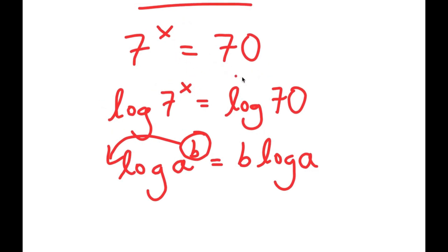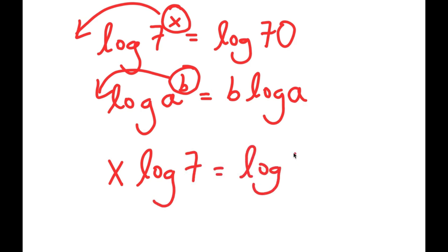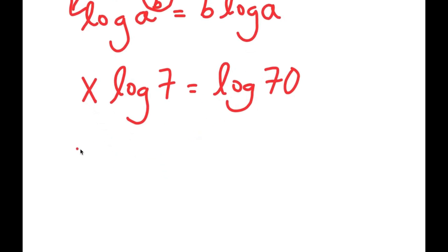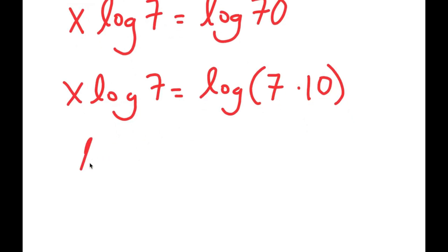Now I can move x to the front and it becomes an actual term. So I get x times log 7 is equal to log 70. Now log 70 is the same thing as log of 7 times 10.